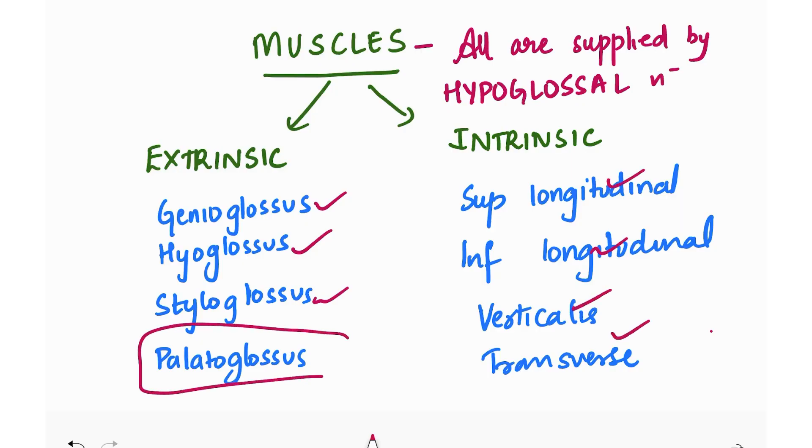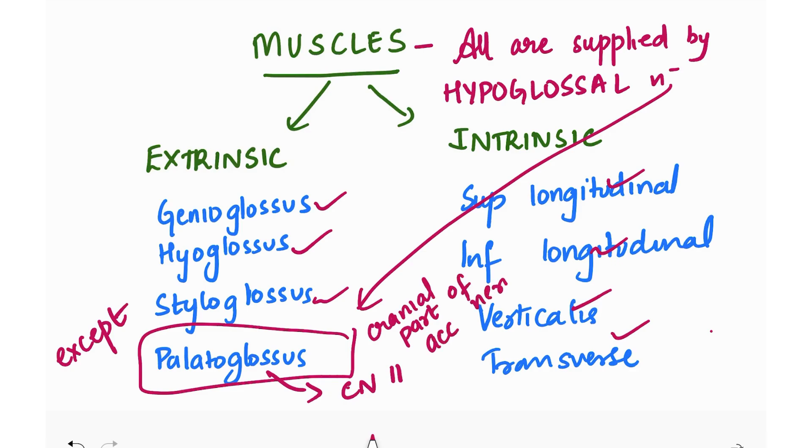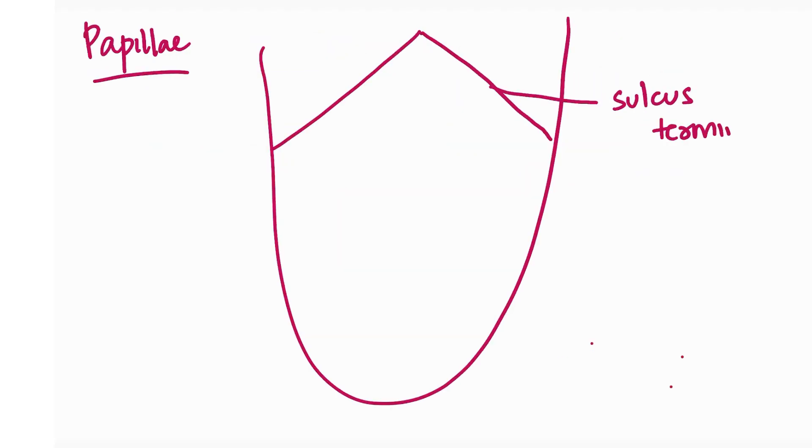Muscles of the tongue can be both extrinsic and intrinsic. All muscles, both extrinsic and intrinsic, are supplied by hypoglossal nerve except one: palatoglossus. This is supplied by cranial nerve 11, the accessory nerve - the cranial part. Palatoglossus is the exception and a hot favorite question because it has the word palate in it and is also a soft palate muscle.